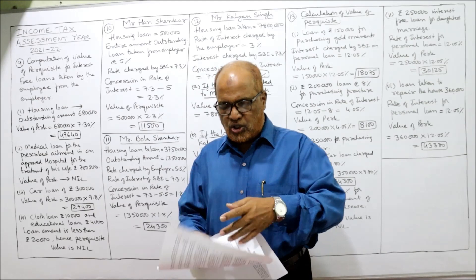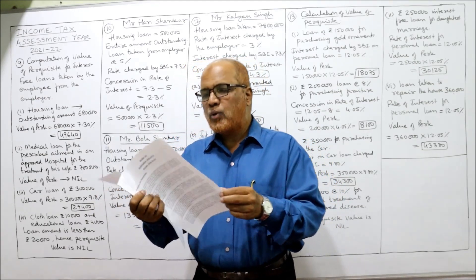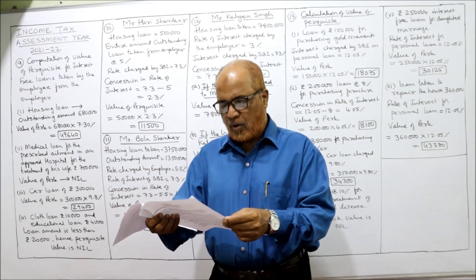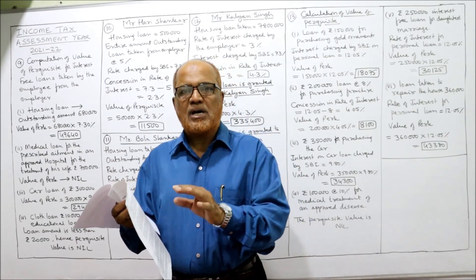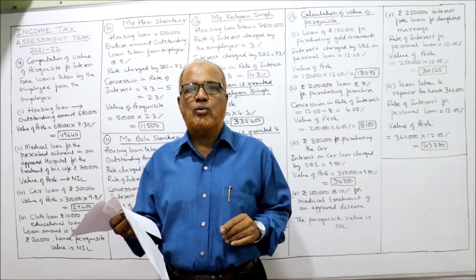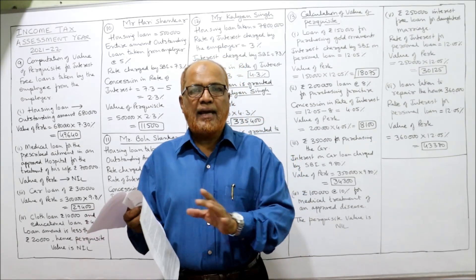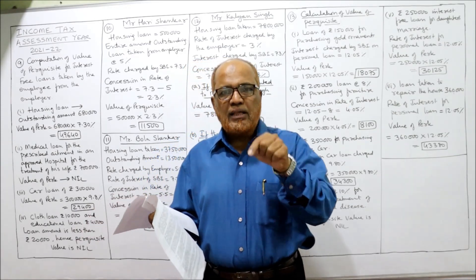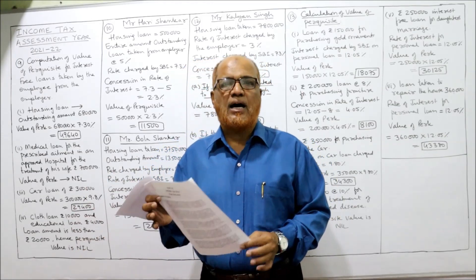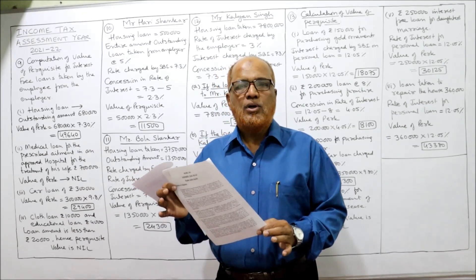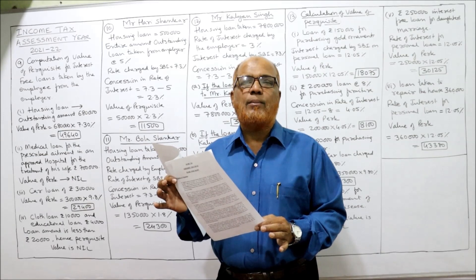I have already given the worksheet of the problems in the link under my description. In this problem, up to eight problems are on rent-free accommodation (RFA), and those eight problems have already been completed in previous videos. Now in this video the remaining problems from 9th to 13th I am going to solve. Concentrate and watch the video till the end to get complete command on perquisites.